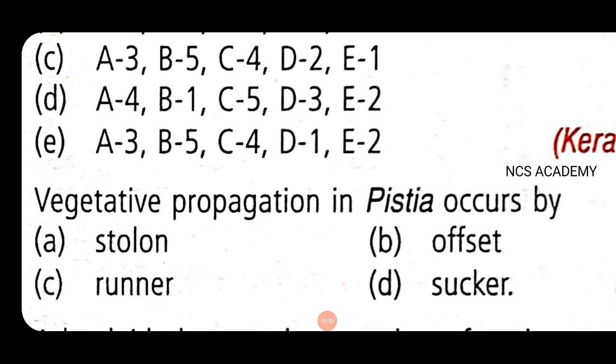Next question is why PMT: Vegetative propagation in Pistia occurs by - Pistia is a common name water lettuce. Vegetative propagation occurs by offset, where one internode-long runner grows horizontally along the soil surface and gives rise to new plants either from axillary or terminal buds. So the right option is offset.